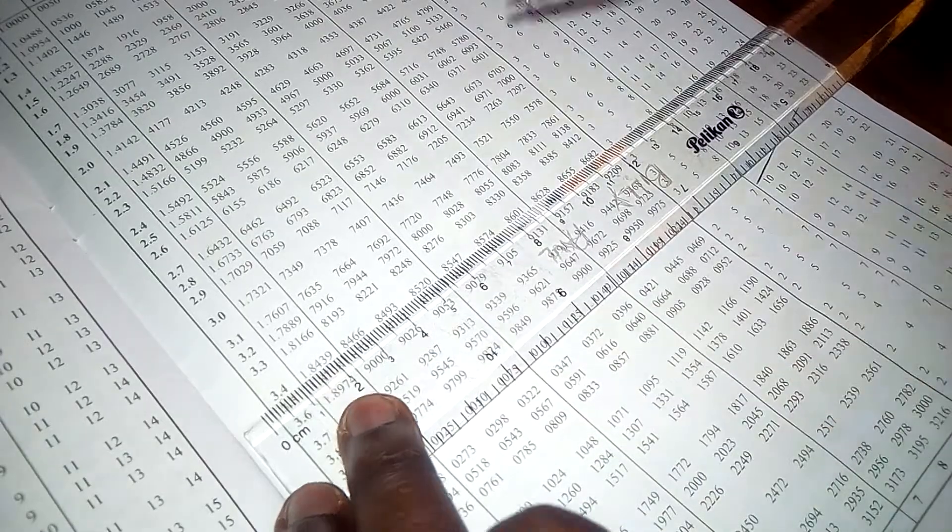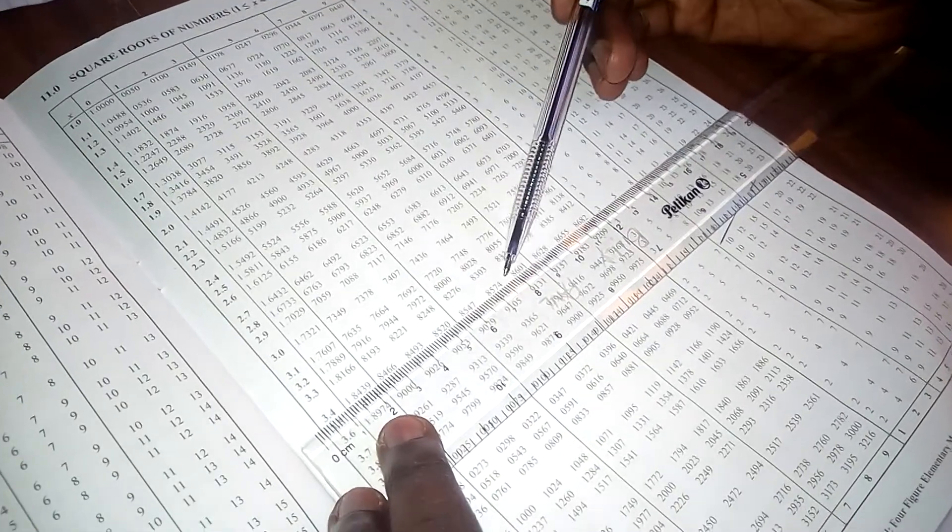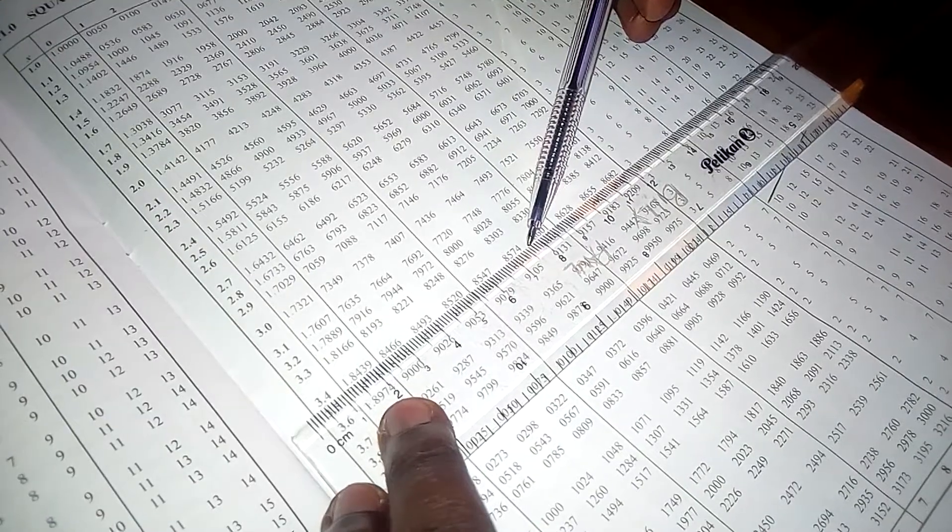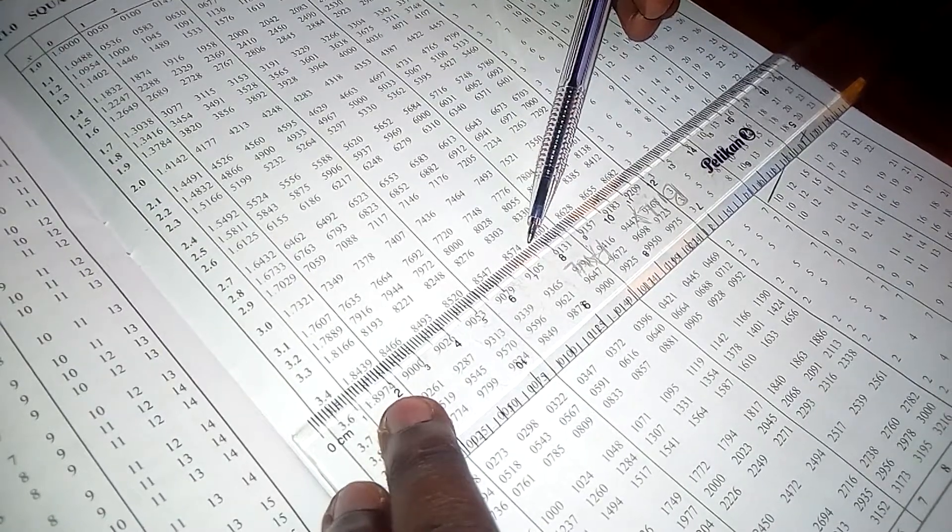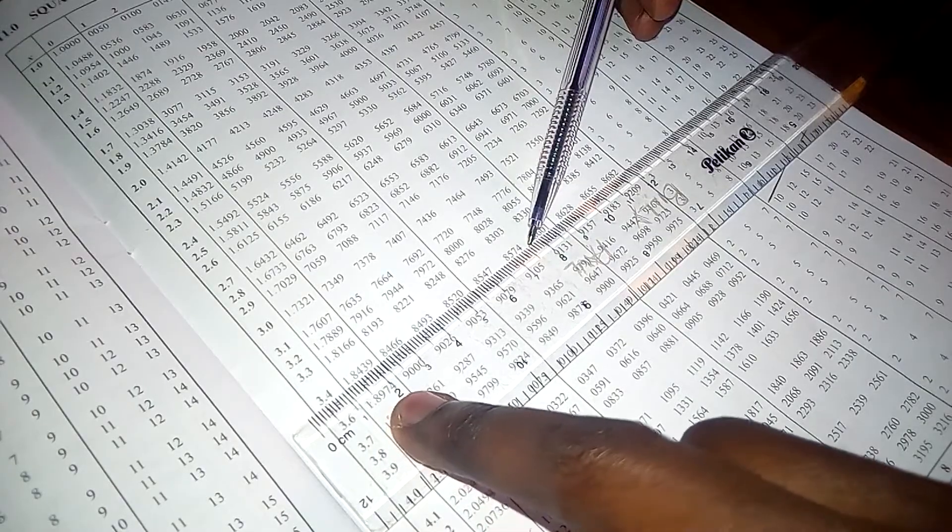So we come and look at 3.4, then 5. We have 5 here. Where does it coincide? It coincides at 8574. It coincides at 8574.